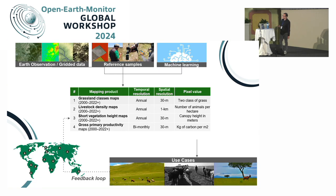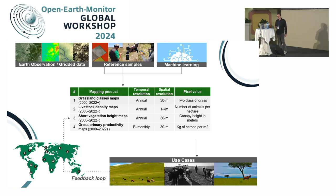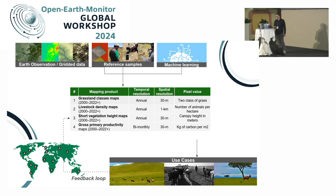Within the context of this project, we are producing four main products: grassland class maps — annual 30-meter maps for cultivated and natural and semi-natural grassland using Landsat data; livestock density maps based on one-kilometer data, annual, measuring number of animals per hectare; short vegetation height where we model canopy height using ICESat and Landsat as input data; and gross primary productivity (GPP) modeled for different land cover types, targeting grasslands, which will also be presented by my colleague Serkan from Open Geo Hub.